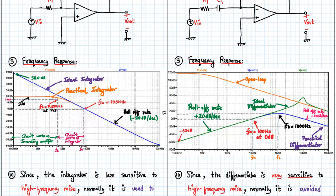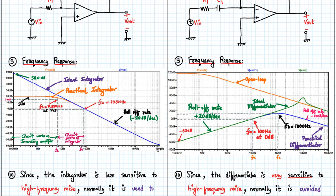Now we compare the frequency response. For an ideal integrator, the gain is very high at low frequencies, and for a practical integrator that gain is reduced to 20 dB. For an ideal and practical differentiator, the gain is very low at low frequencies. As frequency increases for the integrator, the gain starts reducing. For an ideal differentiator, as the frequency increases the gain also increases, resulting in instability, and then it falls down.